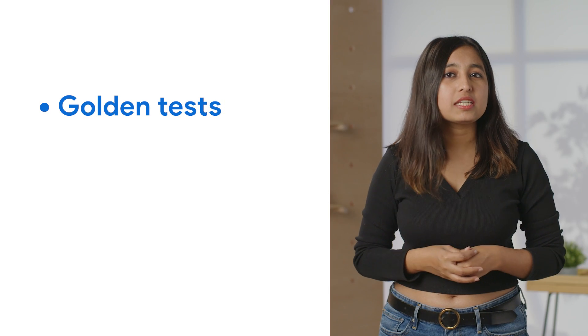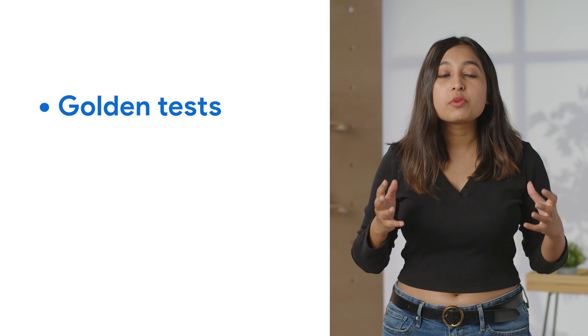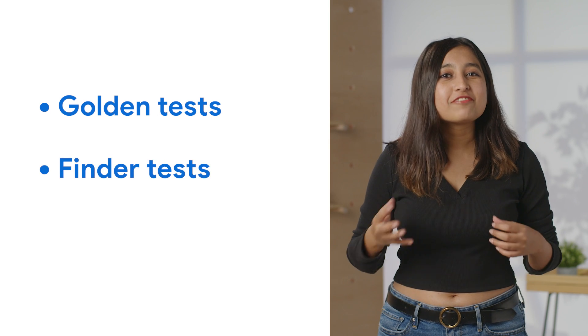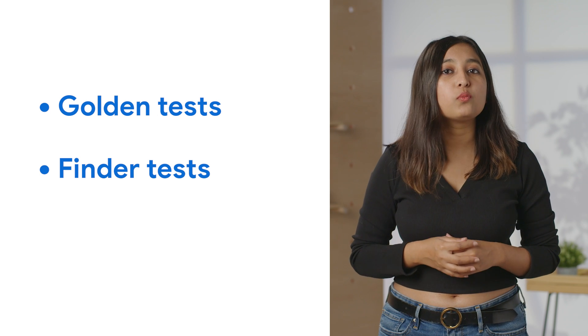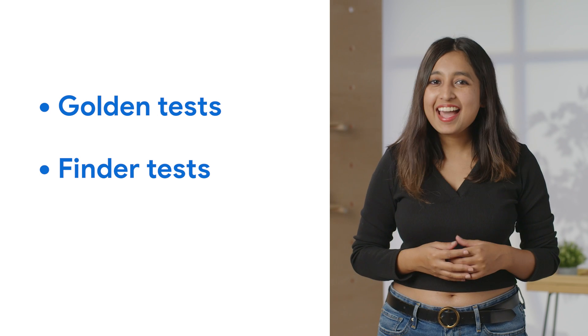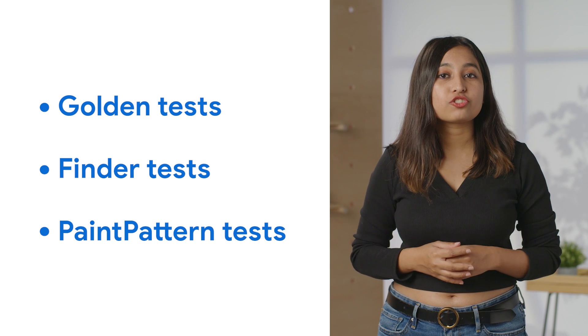We have covered three types of UI tests in this video: golden tests, which are useful for testing with pixel-perfect accuracy, primarily for individual components; finder tests, which are the go-to and most common way to verify widget tree correctness; and paint pattern tests, which programmatically verify the drawing instructions stored on a canvas. That's three more tools in your toolbox for testing all of the beautiful UIs that you're building with Flutter. For everything else about Flutter, head to flutter.dev.